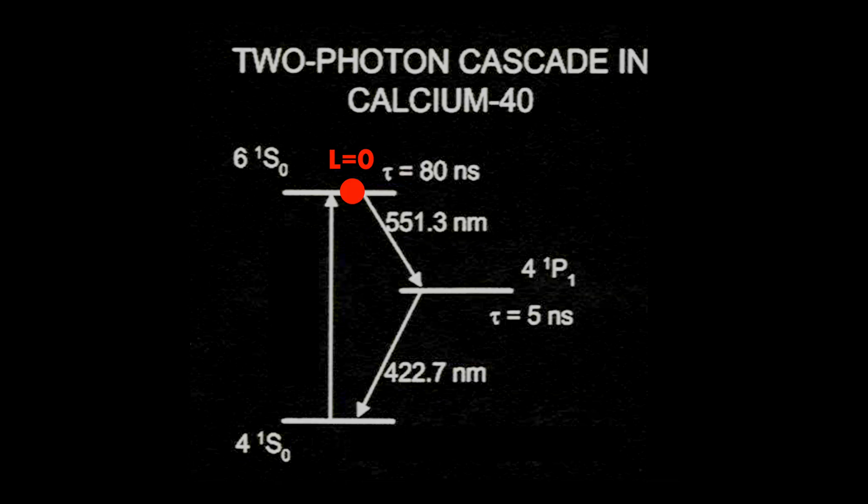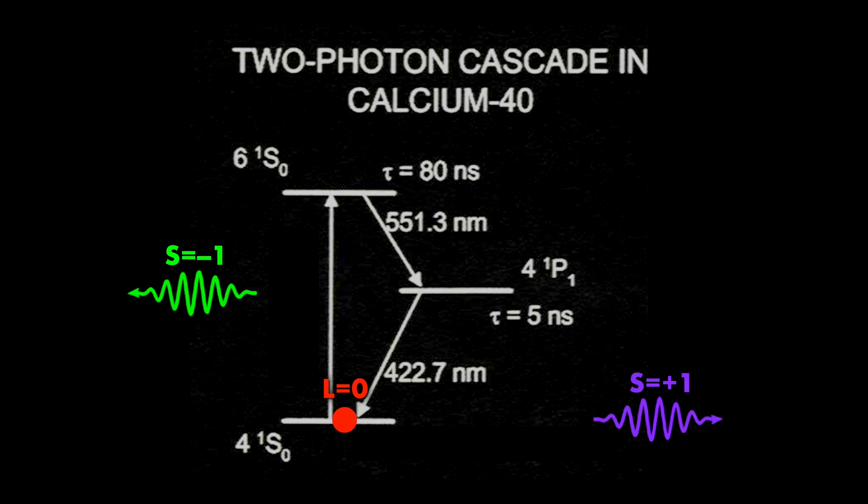One process that isn't really relevant anymore, but it used to be relevant for historical reasons, is atomic cascades. It uses an effect from atomic physics to create entangled photons, and it was used in the first experiments to test the Bell inequality. I will shortly publish a short on this.